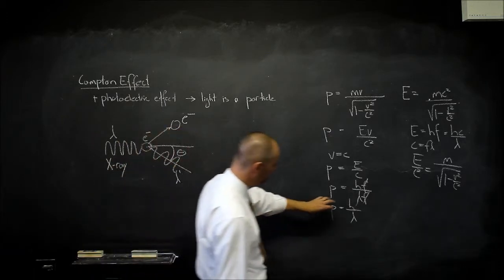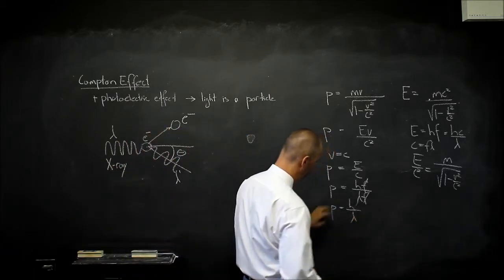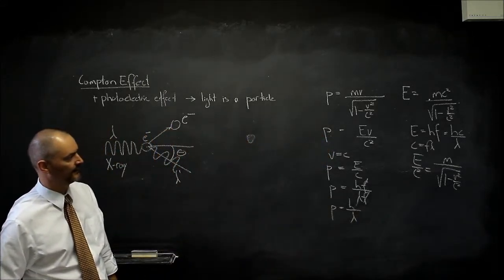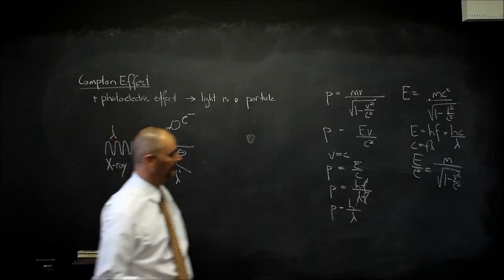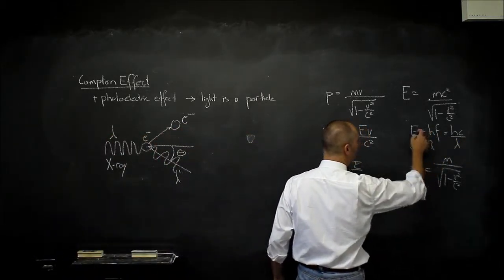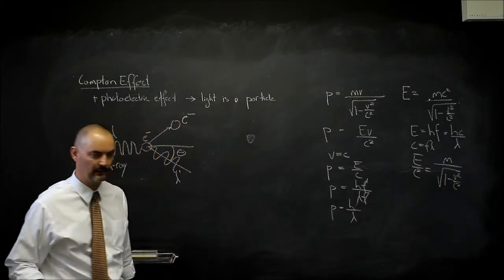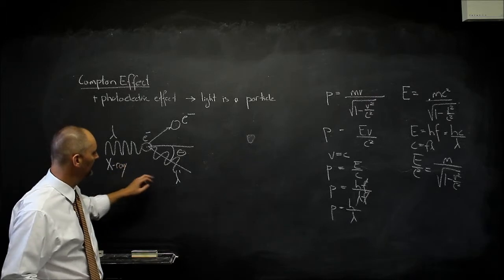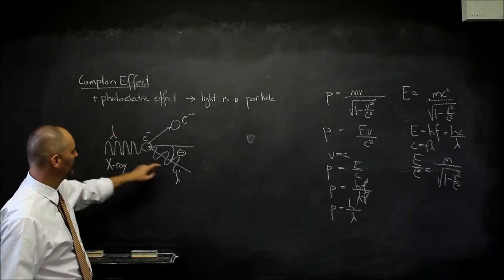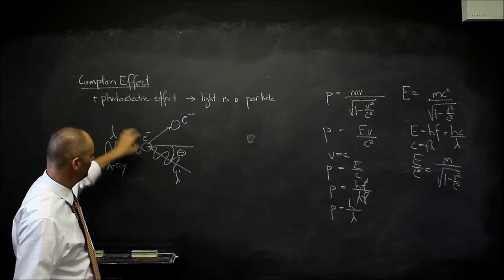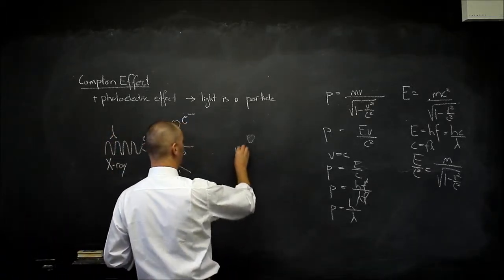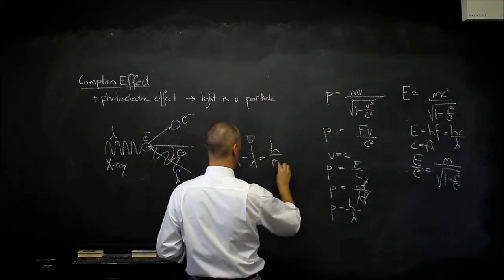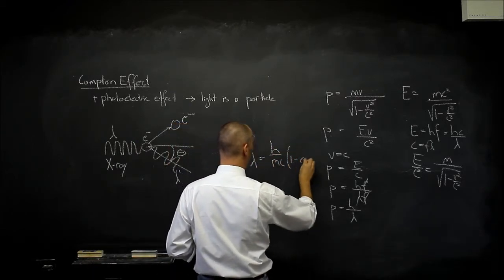For the photon to lose momentum — for this p-value to go down, meaning for p = h/lambda to give a smaller number — the wavelength must increase. And if the wavelength increases, its energy will also go down, since wavelength is in the denominator. There is an equation relating the initial and final wavelengths: the final wavelength minus the initial wavelength equals h over mc times (1 minus cosine of theta).